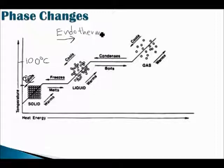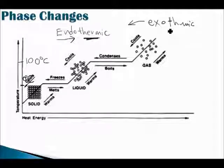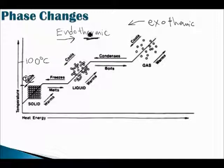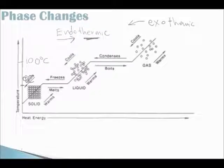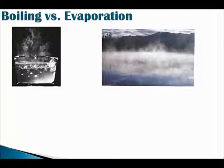The process where we put energy into the system is known as endothermic — 'thermic' relating to temperature. The reverse process, where we take heat energy away from the system, is known as exothermic. These terms come up quite a bit in chemistry; they're not words you'll need for IB Physics specifically, but they help relate to other courses you're taking.